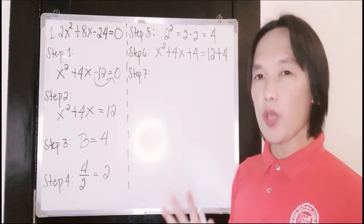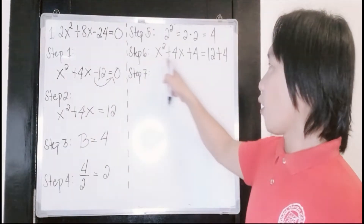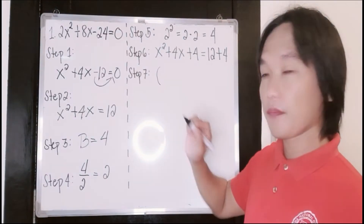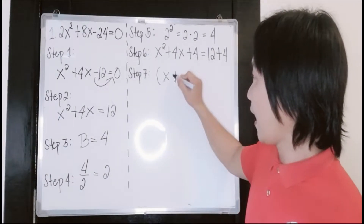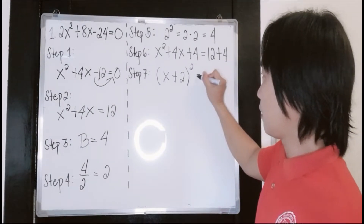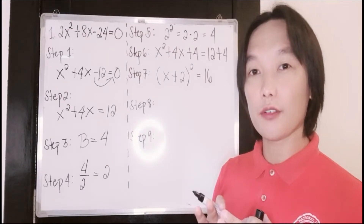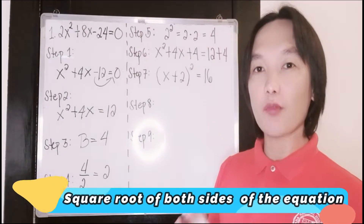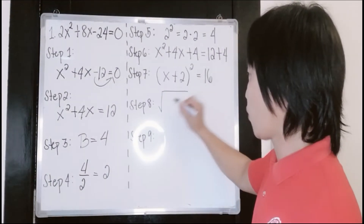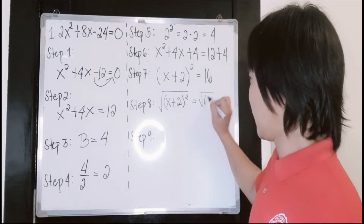Step number 7 is we are now going to rewrite our equation. As you can see, if you factor x squared plus 4x plus 4, it will just be parenthesis of (x plus 2) quantity squared. And this will become 12 plus 4, which is equal to 16. Step number 8 is we are going to get the square root of our equation. So we are going to get the square root of each side, which will also be the square root of 16.